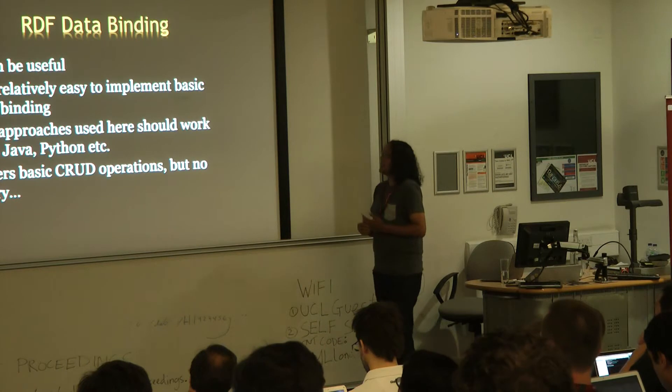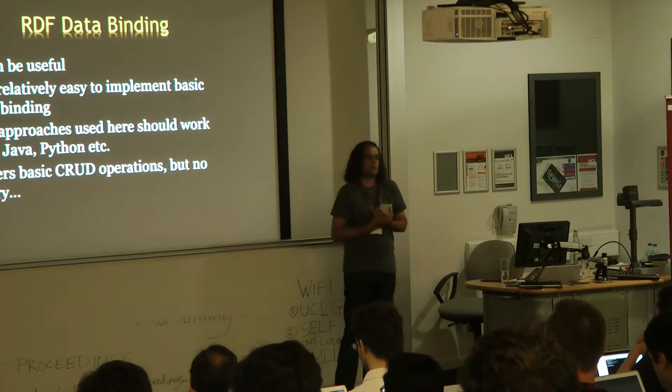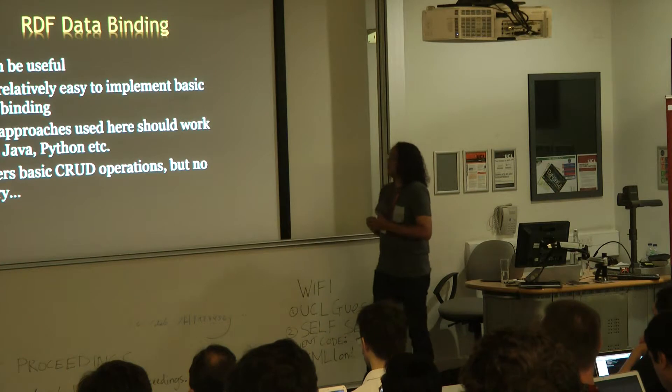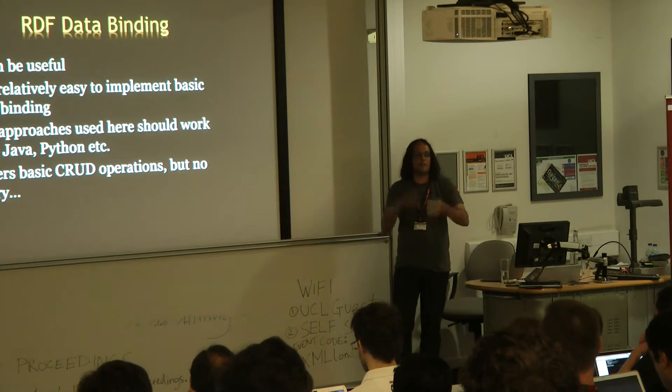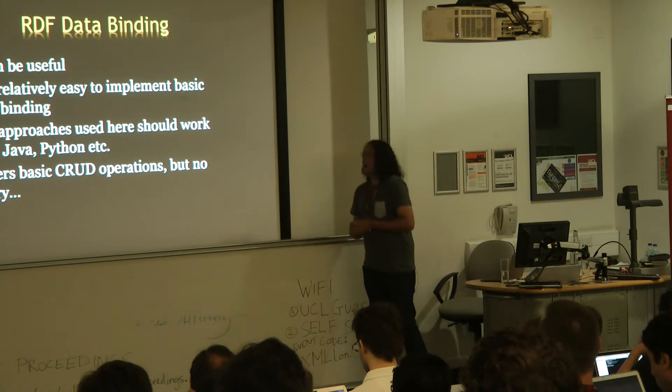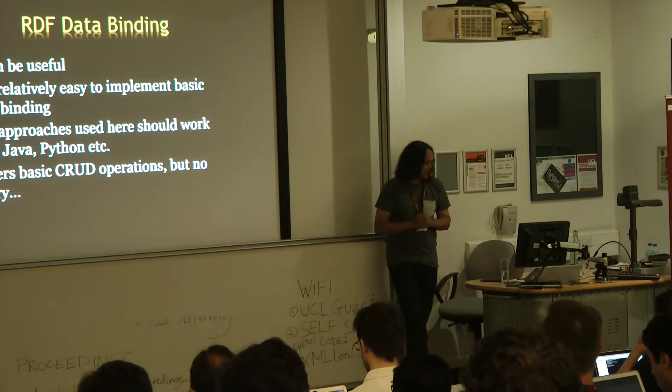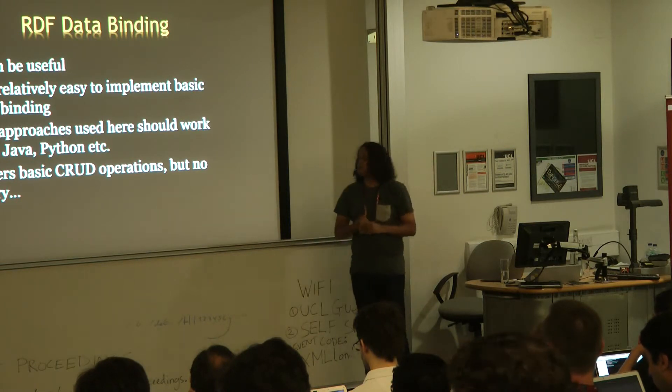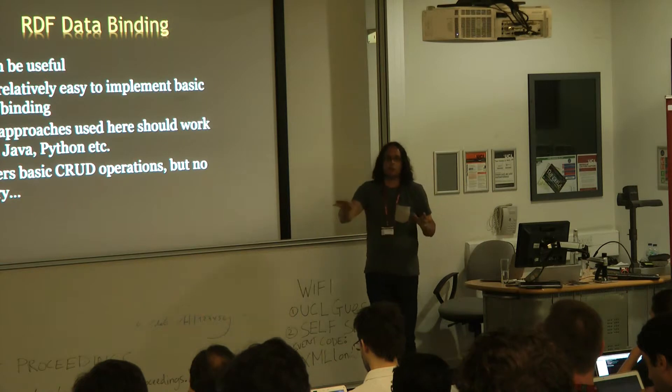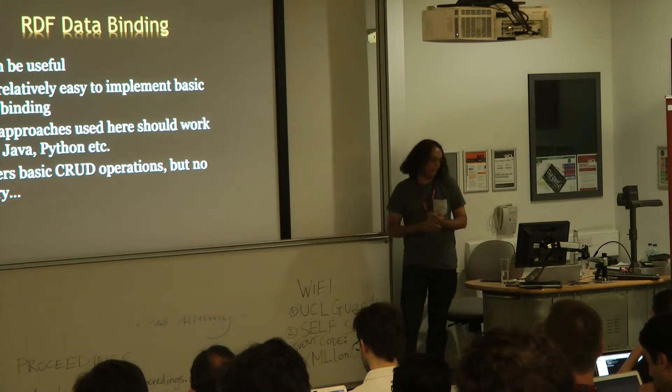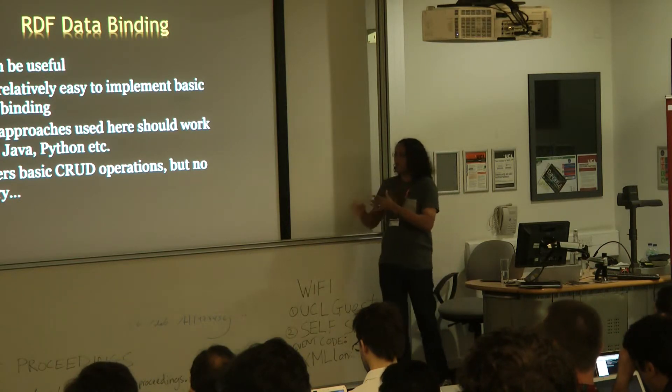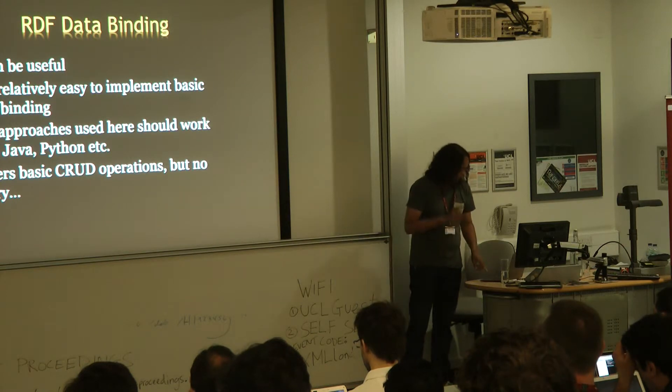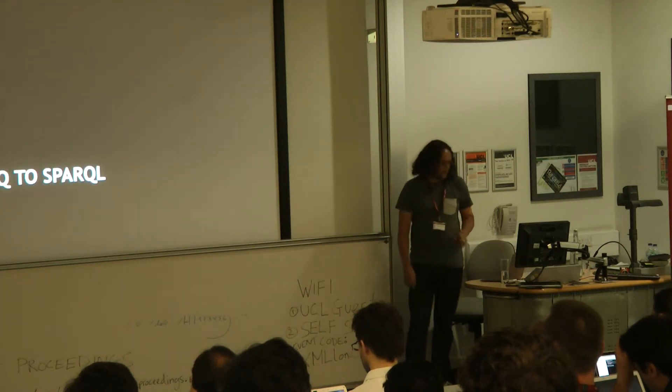So, the RDF data binding, what we found is that it can be useful, and it can be especially useful for people who don't want to deal with RDF, as a way of hiding it from them, but they're still using RDF. If you're on top of BrightstarDB, then you're using our datastore, but you can basically do this against any SPARQL endpoint or anything that supports SPARQL update. We found that it was relatively easy to implement the basic data binding stuff, and I think that the approaches that we've taken should be extensible to non-.NET platforms, which is apparently a thing. So, what we've covered so far are basic creation, update, and delete, but we haven't done the query. That's where LINQ to SPARQL comes in.